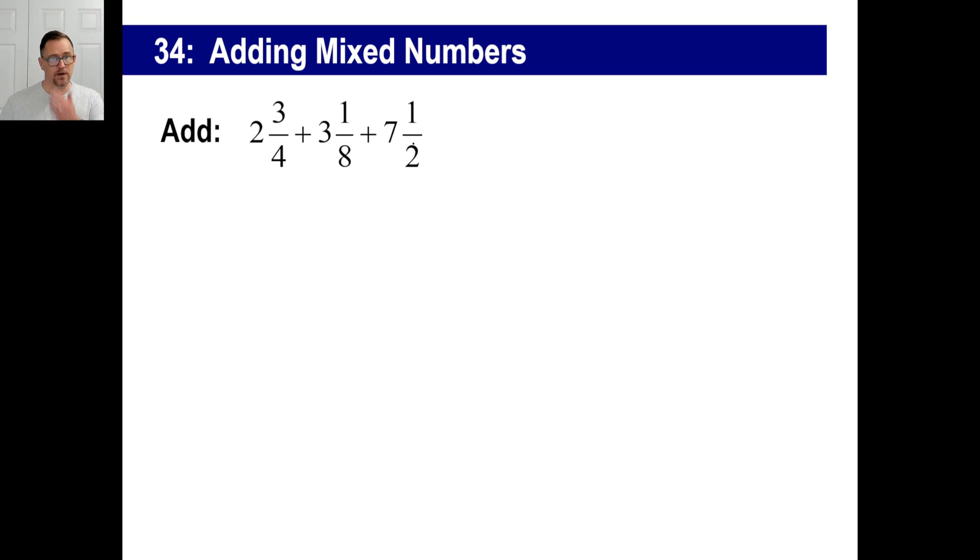Now if you don't have the same denominators, you're gonna have to figure out a common denominator. So let's do that in this one. Pause it if you need to. Well let's find out the common denominator. Obviously that is an eight, so we'll have 2 and 6/8, plus 3 and 1/8, plus 7 and 4/8.